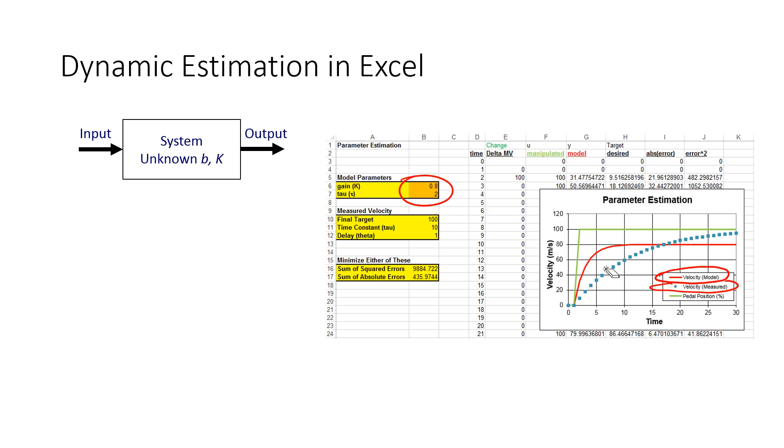These were the measurements. And we currently, with these parameters right here, we have this red line right here. Those are my model predictions. And we want to try to align those by adjusting these parameters. So we'll do that with Excel Solver.